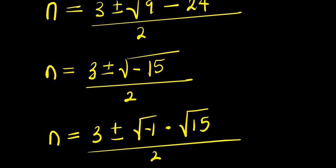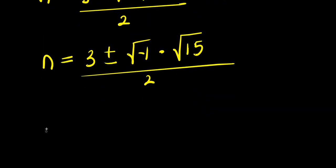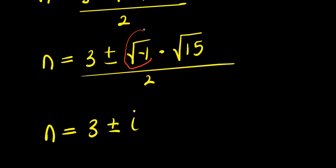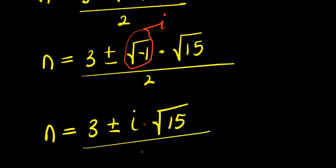From here, √(-1) is i — iota, the imaginary number i — times √15, divided by 2. So n = (3 ± i√15) / 2.